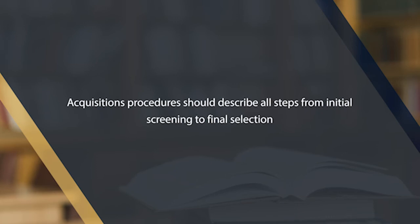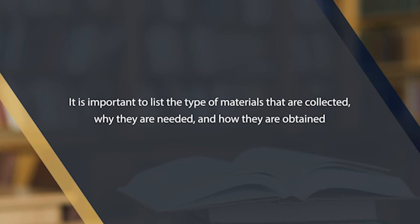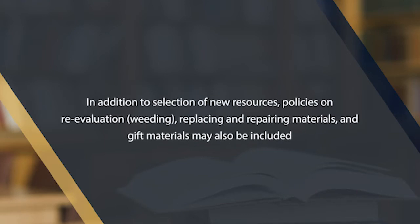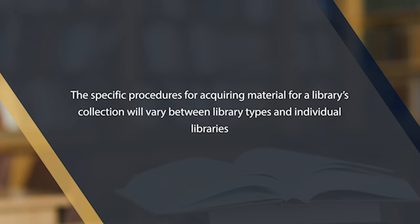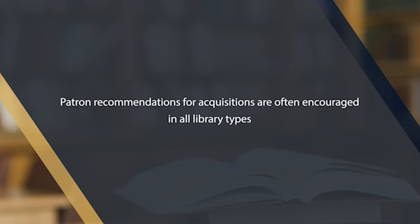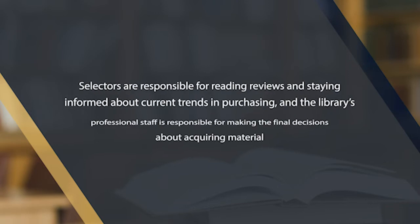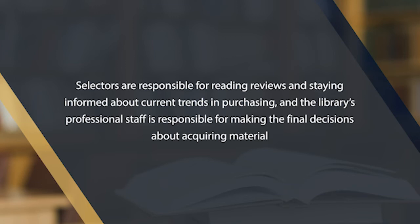The acquisition process is divided into three categories: in a small school or college library, in an academic library, and in a public library. The procedures should describe all aspects from initial screening to final selection. It is important to list the types of materials collected, why they are needed, and how they are obtained, including policies on weeding, replacing, repairing materials, and gifts.